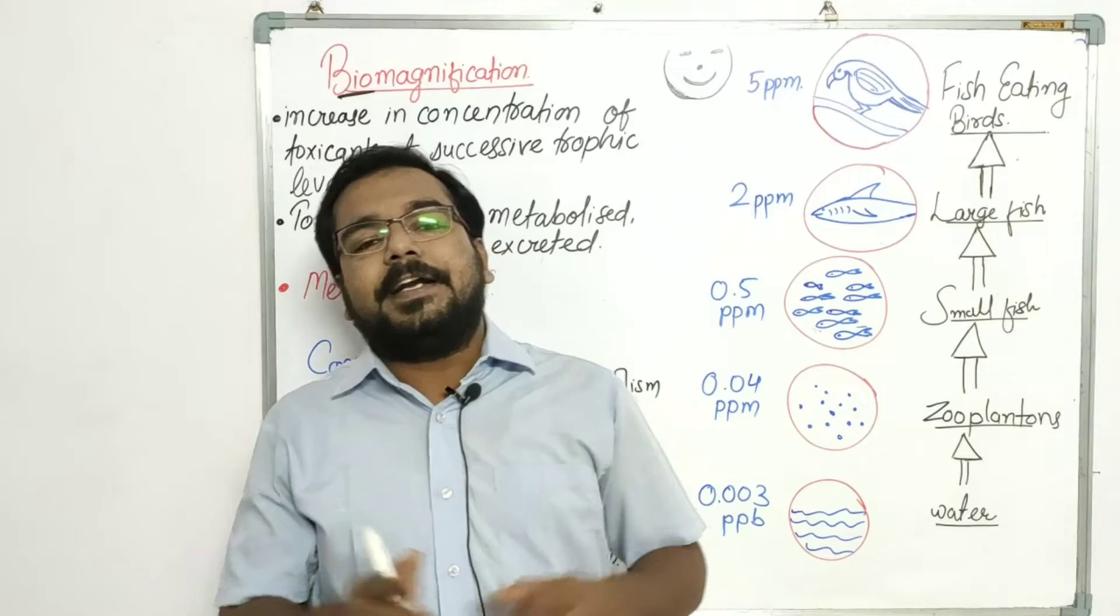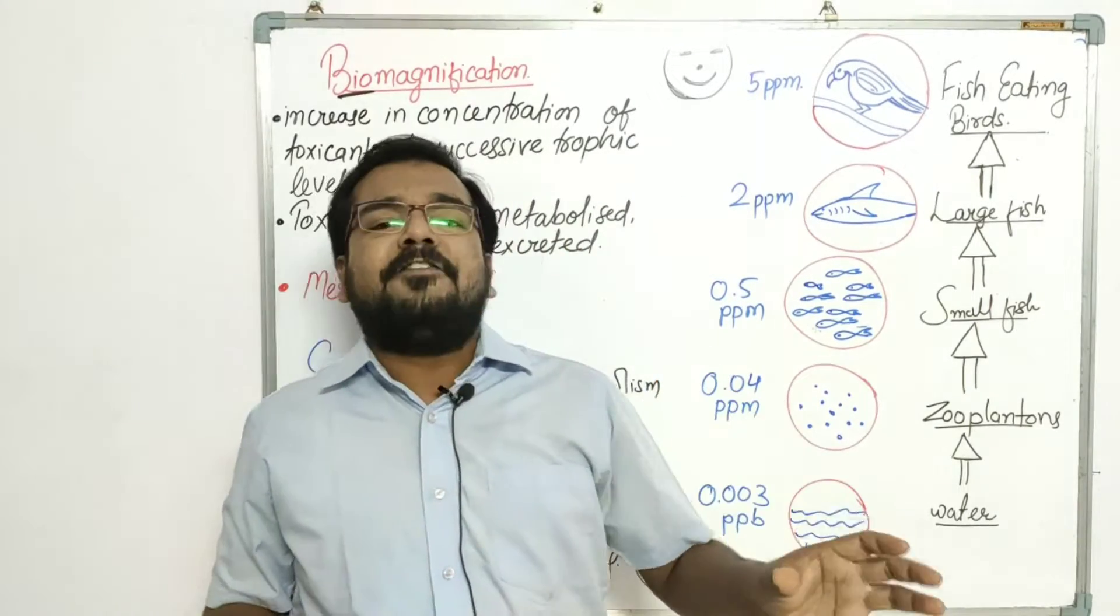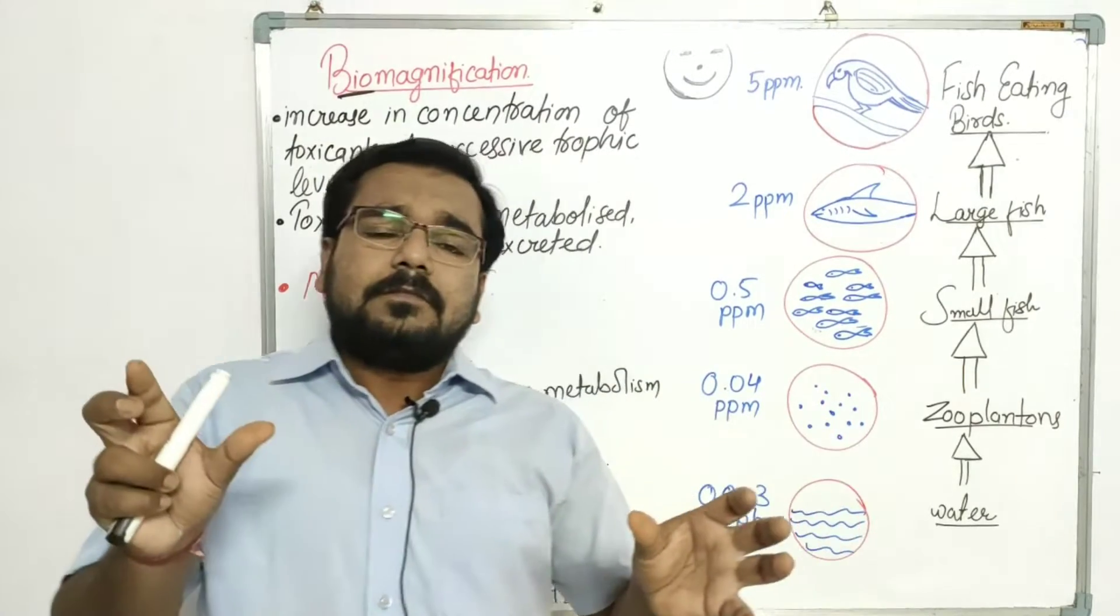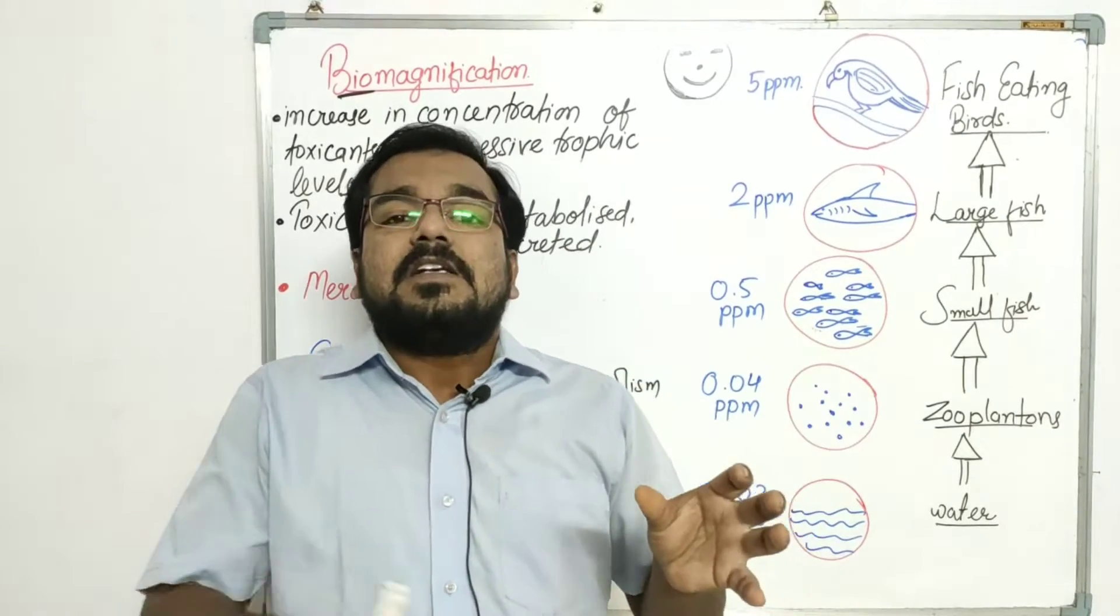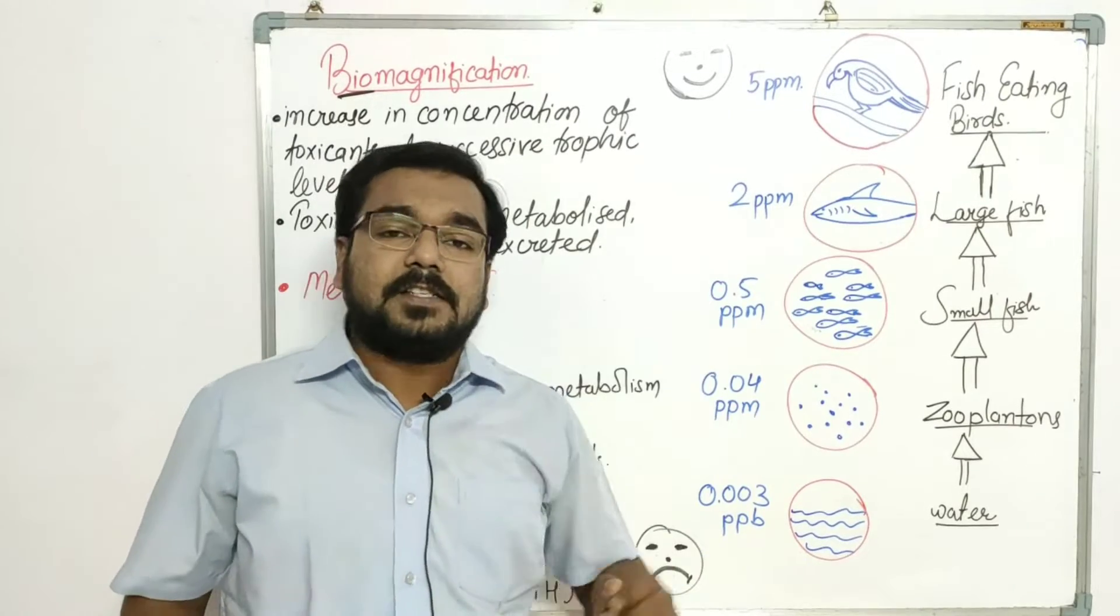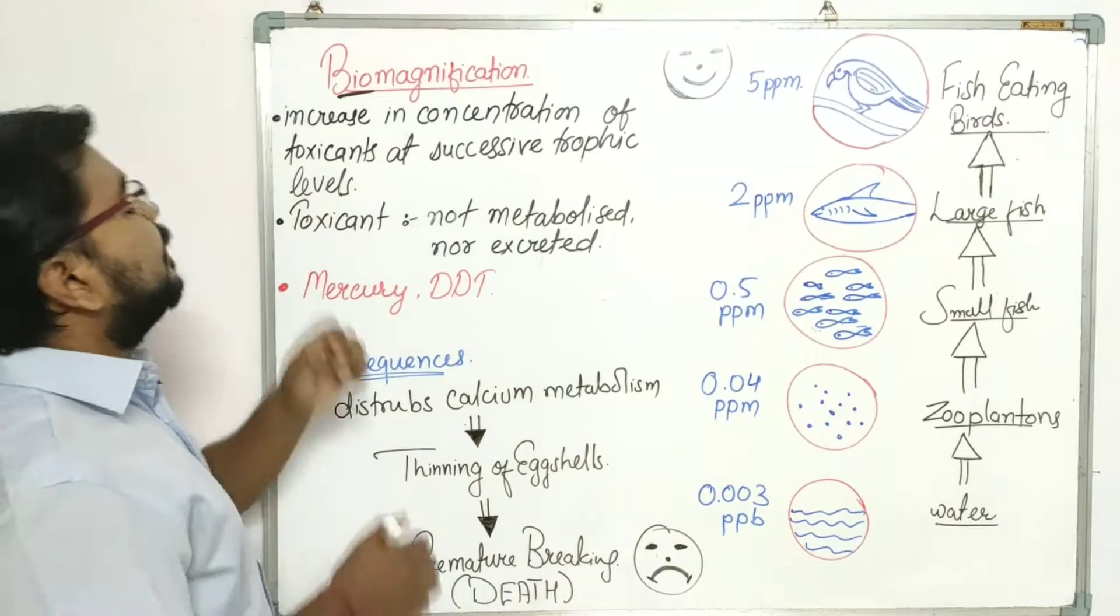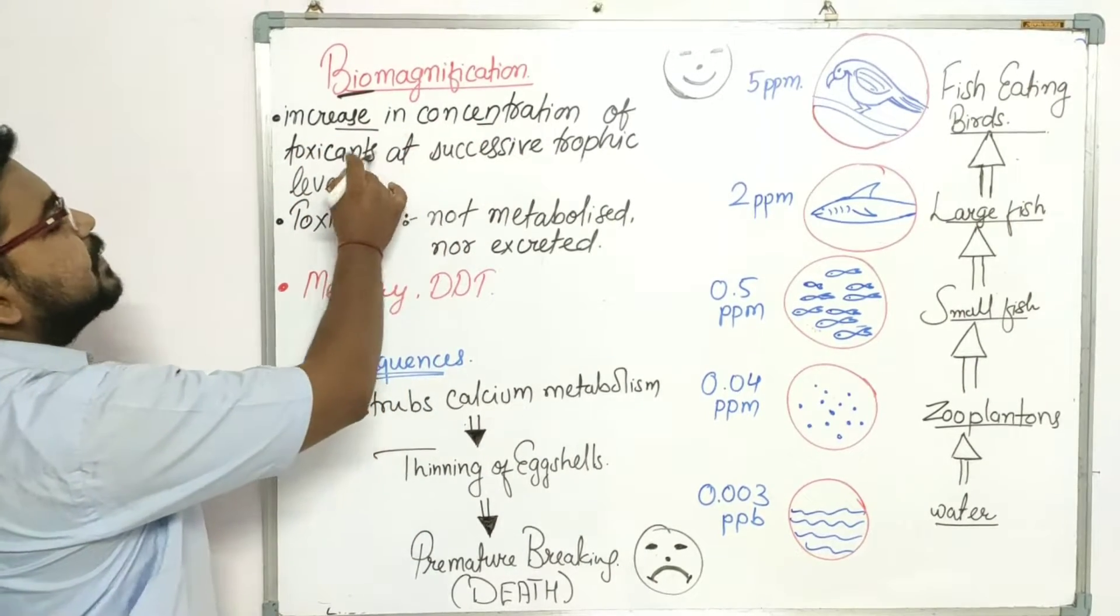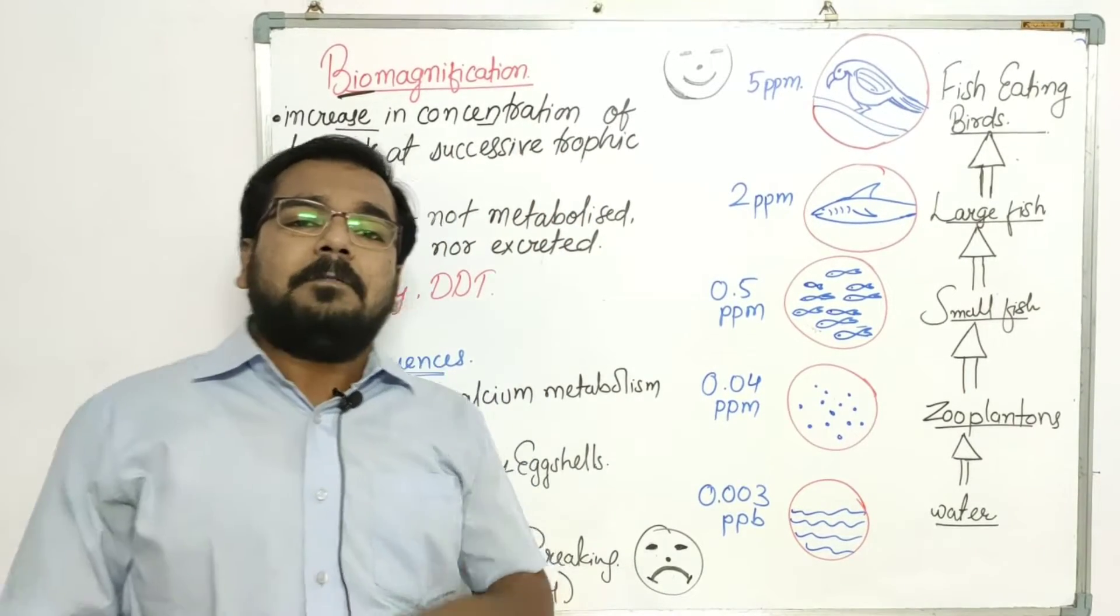Its second name is biological magnification. When you break down this name, you get biology. Biology means living organisms and magnification means building things. So when we find into the living organisms or living system, certain toxic substances would start to increase at successive trophic levels. It will be called biomagnification. We can see here that increase in the concentration of toxicants at successive trophic levels is referred to as biomagnification.